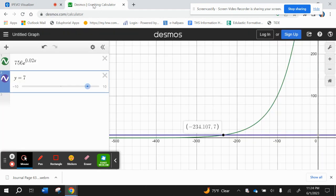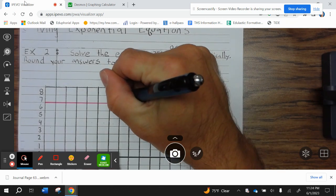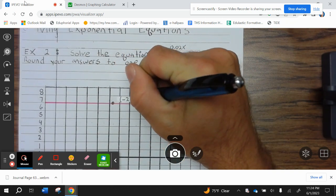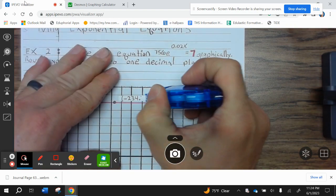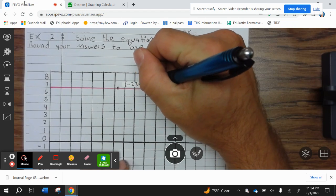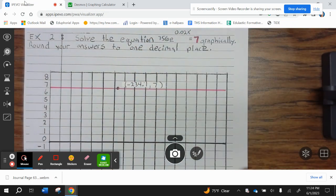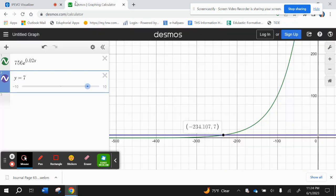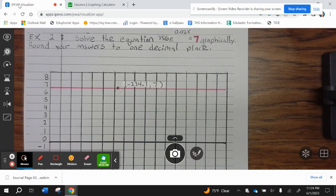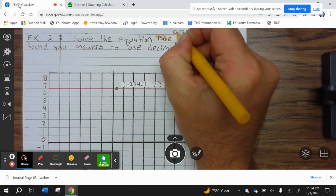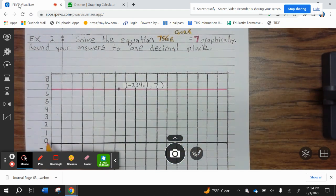So real quick, negative 234.1. Oh, not 0.7, 0.1. Comma 7. And then your curve, you can see here, we'll just do this in yellow, follows along here and goes out.